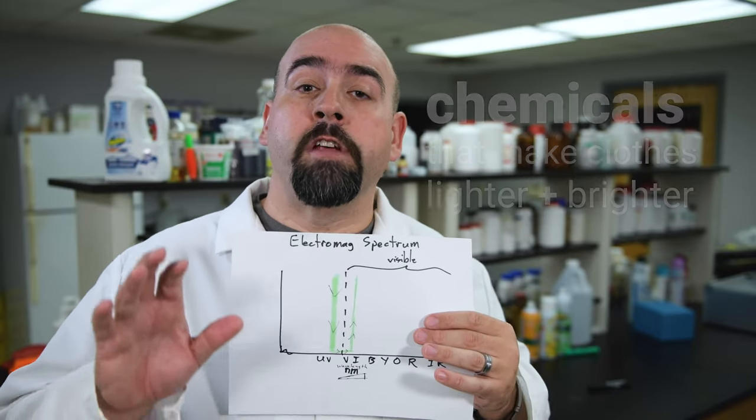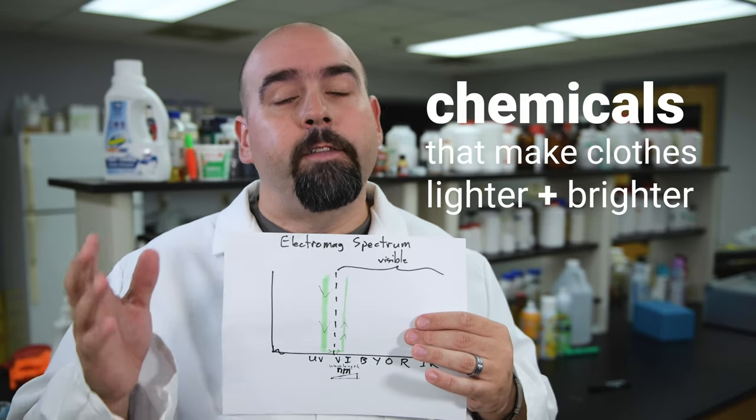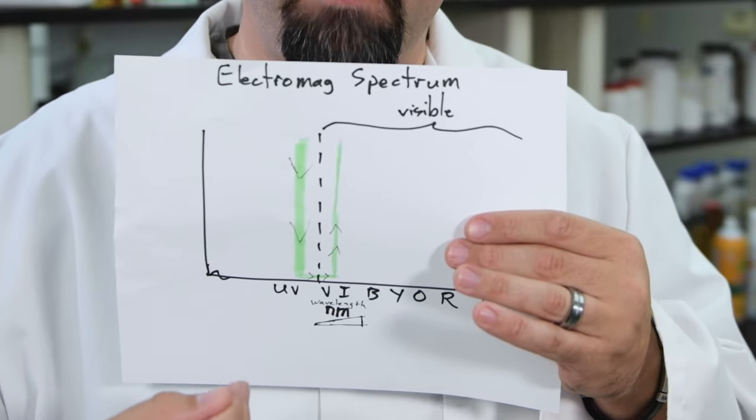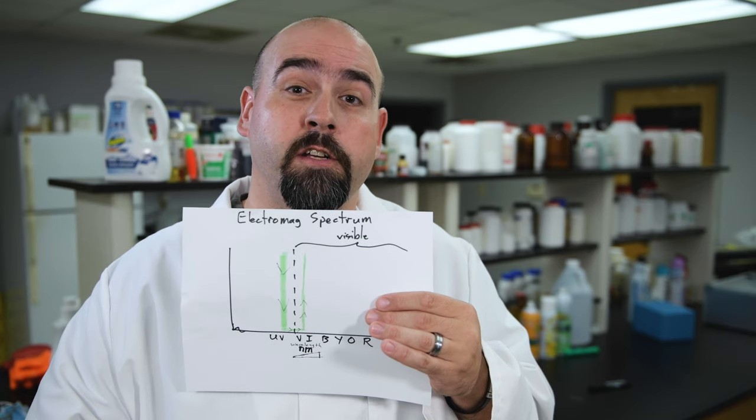Optical brighteners are chemicals that laundry detergents leave on your clothes to make them look lighter and brighter. The way that works is they absorb light in the UV spectrum up here where you can't see it and re-emit it in the blue spectrum right on the edge of what's visible to us humans.